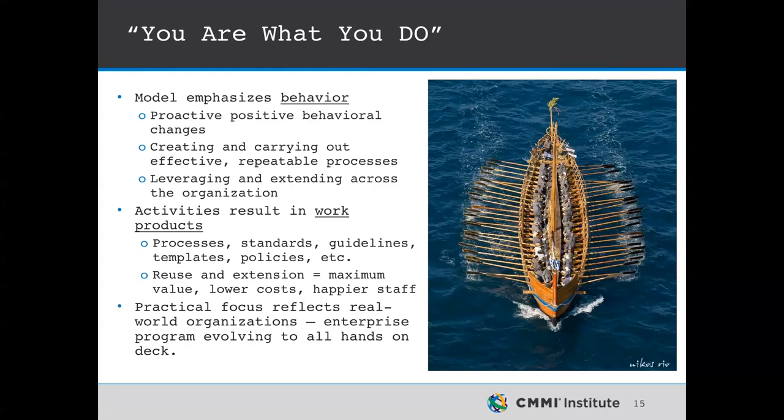You also need policies and standards against which you can align what you do, and the activities result in work products — guidelines, templates, training, et cetera. When you have a good set of policies, processes, and standards that are well thought out and approved by governance — done collaboratively, not surprising people — once those are in place, everyone is more productive. You save time in development projects and data integration, and everybody is happier and more relaxed, which means they can do more creative things.